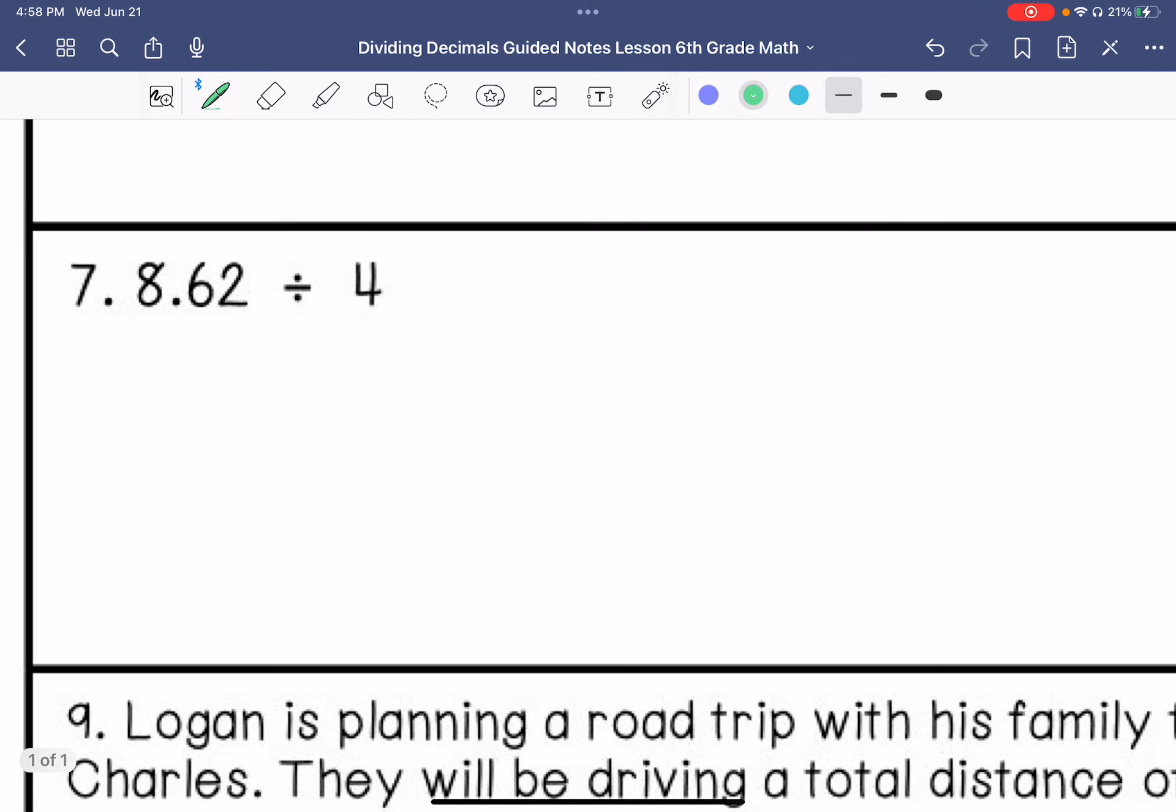Number 7. 8.62 divided by 4. My divisor is a whole number, so I will keep it there. 4 goes into 8 two times. 4 goes into 6 once. 4 goes into 22 five times. I'm going to add a 0, because adding that 0 doesn't really change the value of the number. 4 goes into 25 five times, so my answer is 2.155.